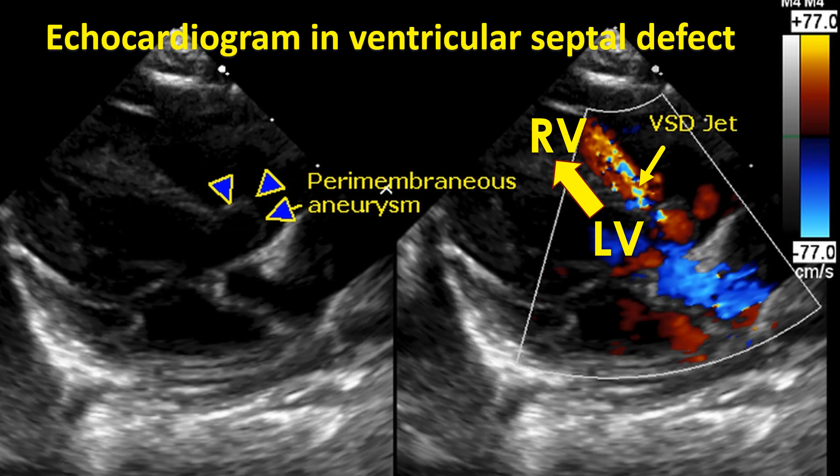This is an echocardiogram showing a left-to-right shunt from the left ventricle to the right ventricle. Left-to-right shunt occurs in VSD because the left ventricular pressure is normally much higher than that in the right ventricle.